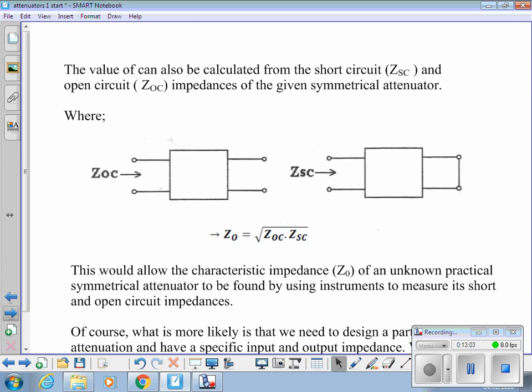You can do so by measuring its open circuit input impedance with a metre, measuring its short circuit input impedance with a metre, and then using that formula. So if we had a practical attenuator here on the table, and that's not marked, but we know it's symmetrical in nature, we can put an ohm-metre on the input, take a reading, connect the short circuit on the output, take another reading, and use that formula there, and we can find the characteristic impedance of that attenuator.